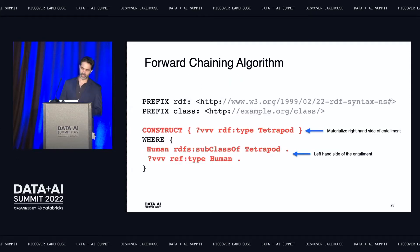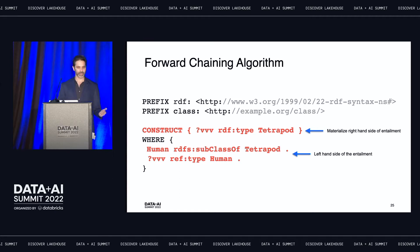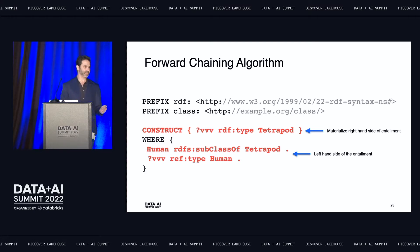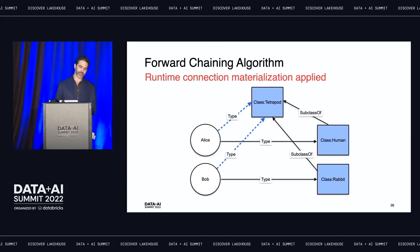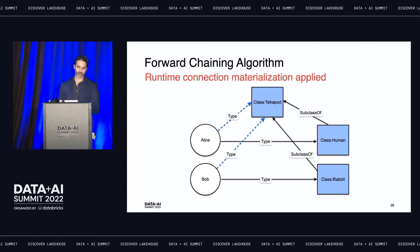Under the hood in the Bellman engine, we generate a query by taking the left-hand side of the entailment and placing it into a where clause. The construct statement is where the magic happens—we take the right side of the entailment and put it into the construct statement. In the Sparkle query language, construct is a very powerful feature that returns a new subgraph from which you can materialize new data. We're generating all these new connections that didn't exist before, returning to the engine a new knowledge graph with newly inferred connections—indicated by dotted lines—such as Alice is of type tetrapod and Bob is of type tetrapod. We then run the original query on this new knowledge graph and get back the results we expect.